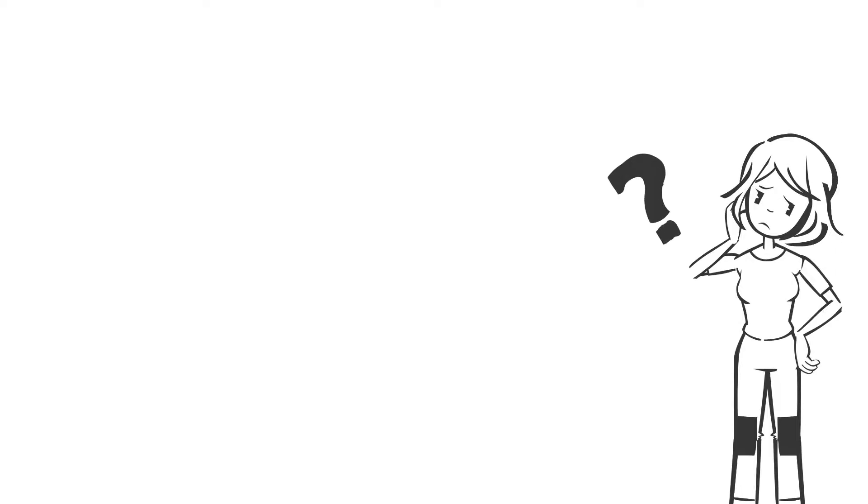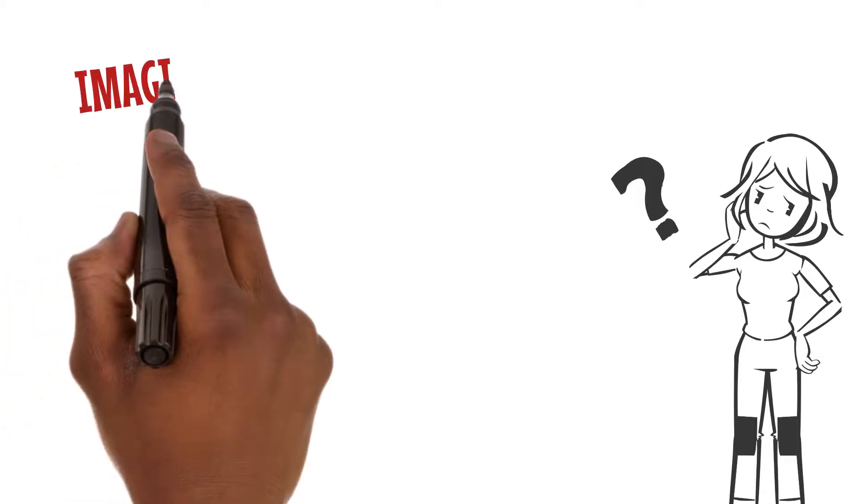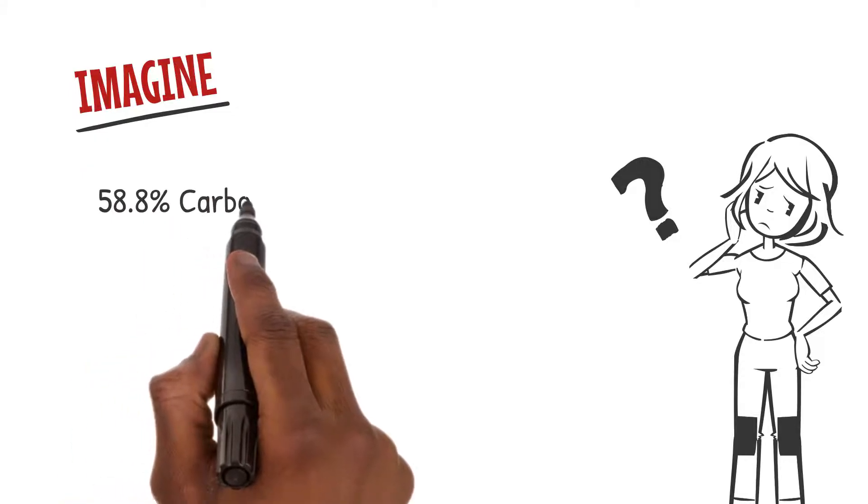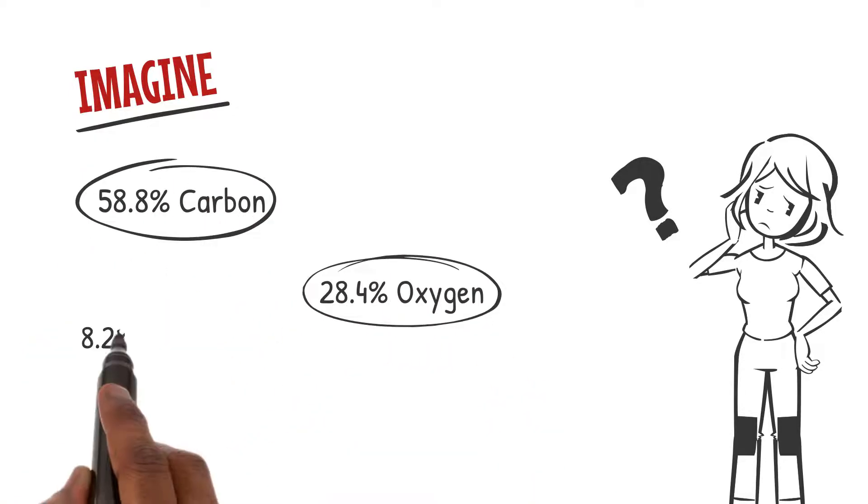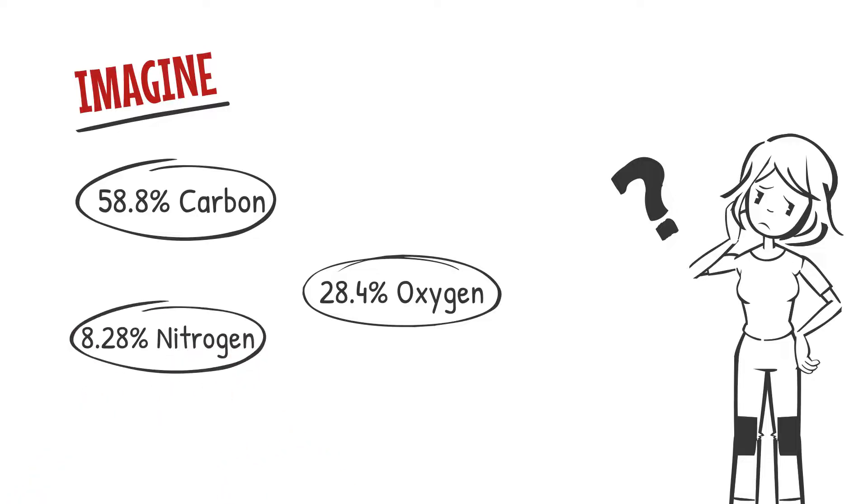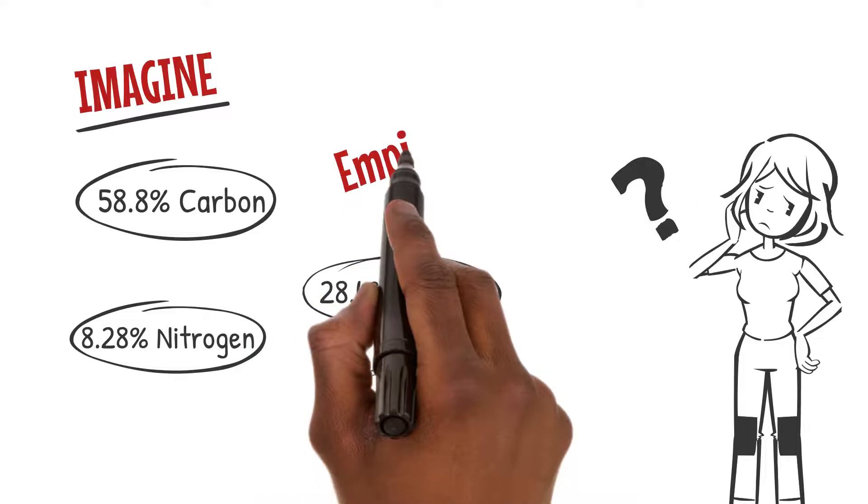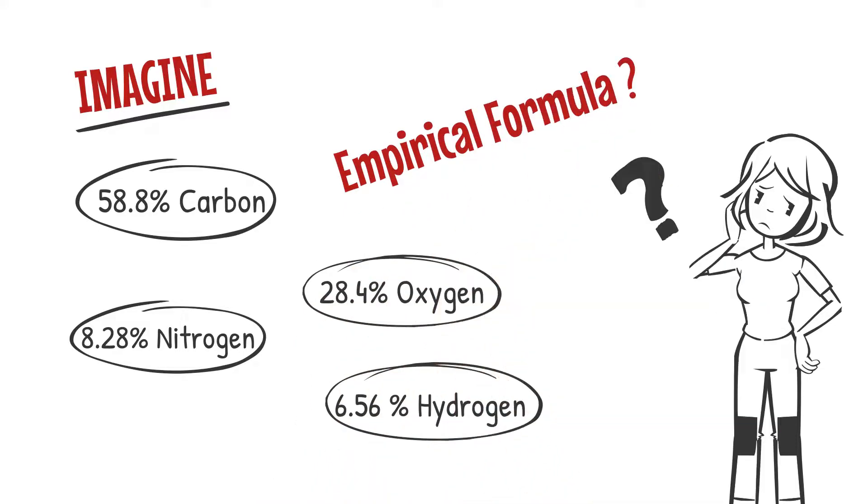Now let's put our thinking caps on and solve a little puzzle. Imagine we have a mystery compound with 58.8% carbon, 28.4% oxygen, 8.28% nitrogen, and 6.56% hydrogen. Can you guess what the empirical formula of this compound could be?